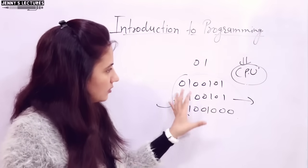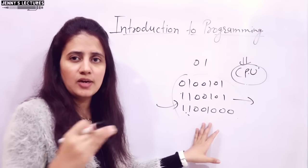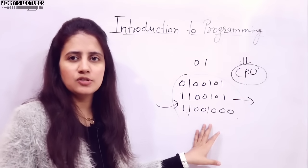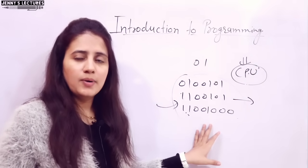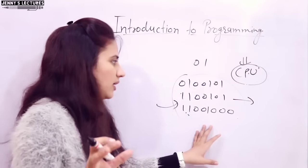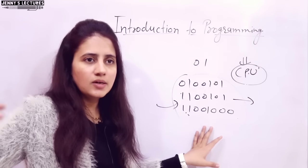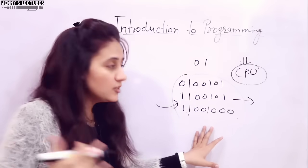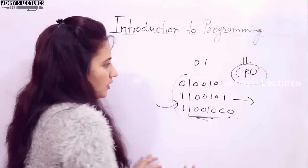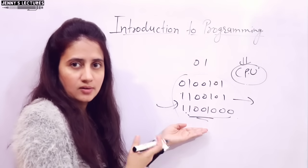If we write a program in machine level language format, that is what machine level language is. There are machine level languages, assembly level languages, and high level languages. We generally prefer high level languages like C, C++, and Java — these are understandable by humans. Machine level code is not understandable by humans.